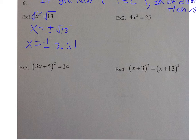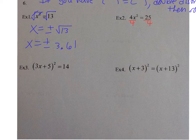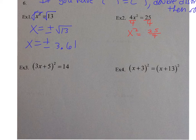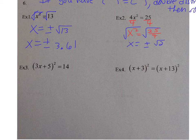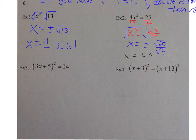Number 2: I notice there is a 4 in front of my x squared, so x squared is not isolated. Divide by 4: I get x squared equals 25 over 4. Since 4 does not go into 25, I leave it like that. Square root both sides: x equals plus or minus the square root of 25 over the square root of 4, which comes out to plus or minus 5 halves.